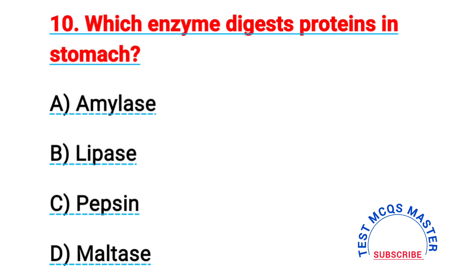Question number ten: which enzyme digests proteins in the stomach? The right answer is C, pepsin.